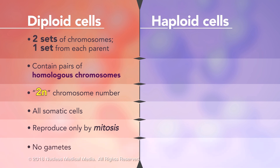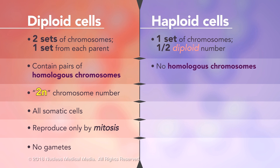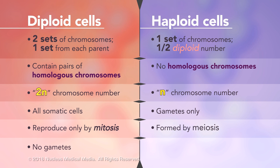And gametes are never diploid. In contrast, gamete cells, which are always haploid, have only one set of chromosomes, which is half the diploid number. Since there's only one set of chromosomes, there are no homologous pairs. The haploid chromosome number is written as N. All gametes are haploid, and haploid gametes form from diploid cells through meiosis, never through mitosis.